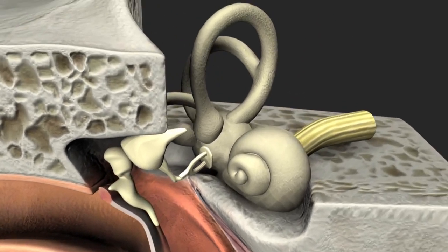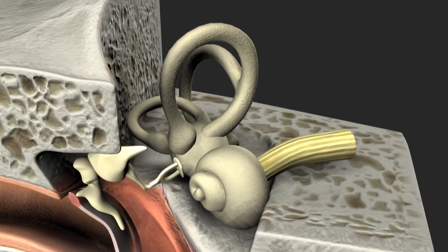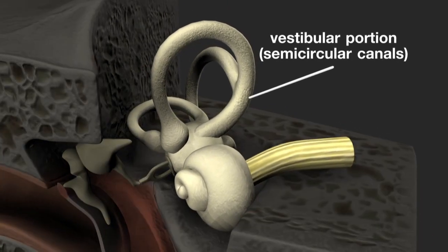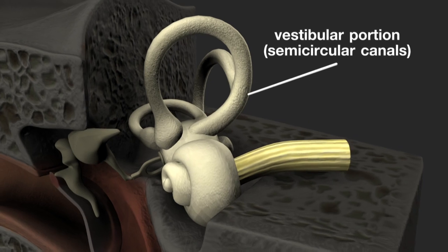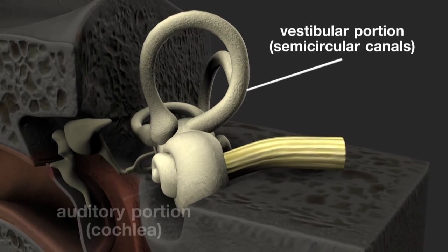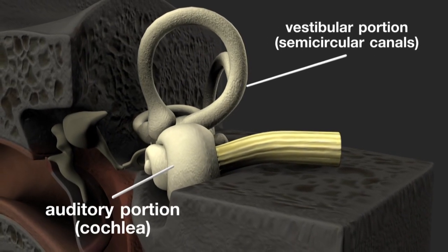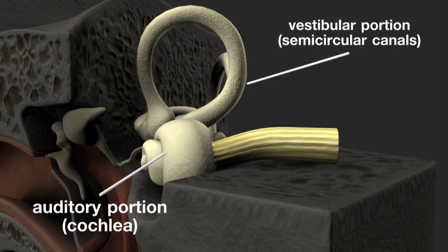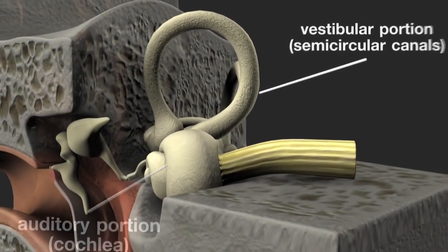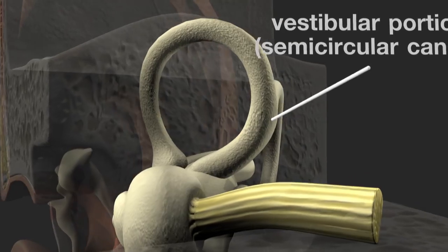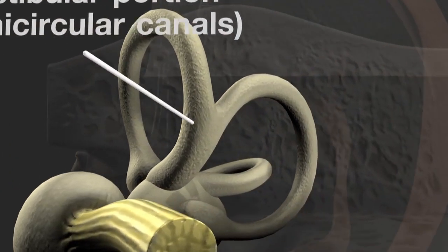The inner ear has two distinct portions: the vestibular portion concerned with balance, and the auditory portion, the cochlea, which is concerned with hearing. The vestibular portion is made up of three semicircular canals. Each canal has a swelling at one end, the ampulla.